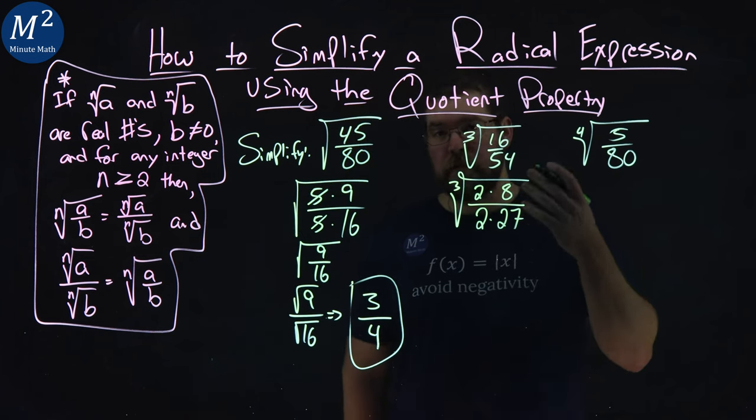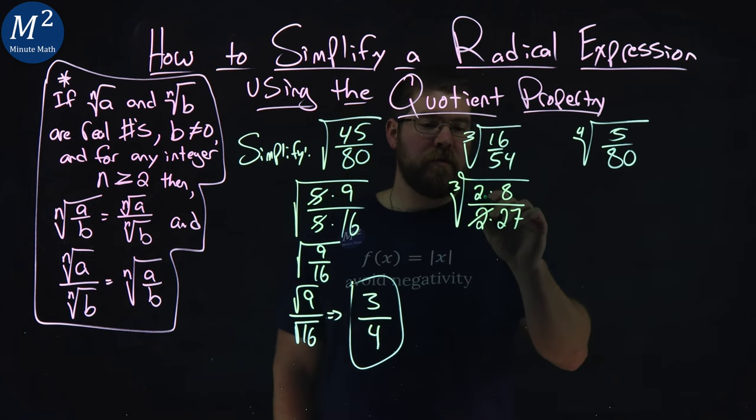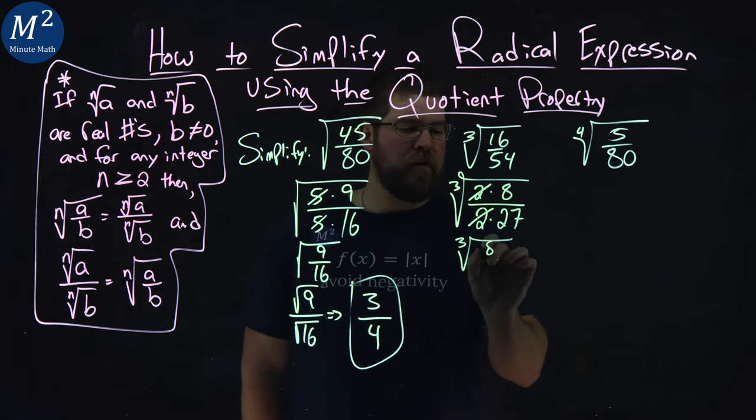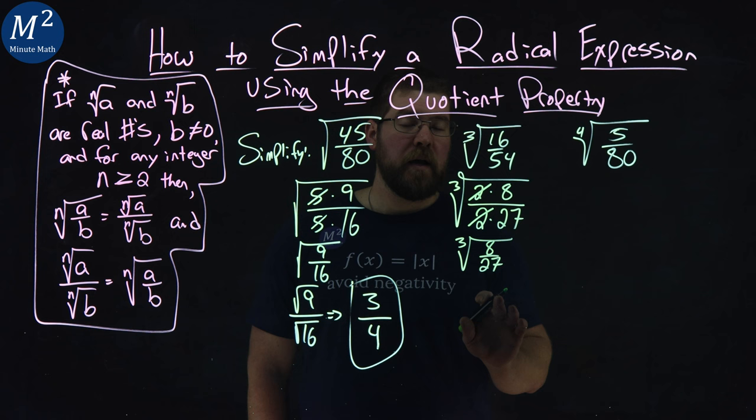54 is 2 times 27. Same idea, 27 is a perfect cube. These 2s also cancel out.